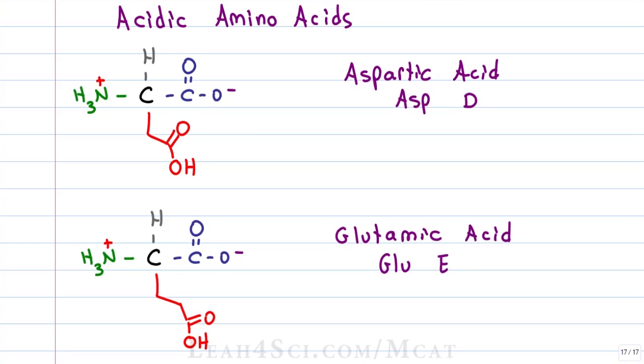There are two acidic amino acids: aspartic acid and glutamic acid. When we look at the zwitterion tutorial, you'll see that at physiological pH, carboxylic acids are in their conjugate base deprotonated form. That means we have to show these amino acids as carboxylates with a negative oxygen in their side chain. The conjugate base of aspartic acid is aspartate, and the conjugate of glutamic acid is glutamate.